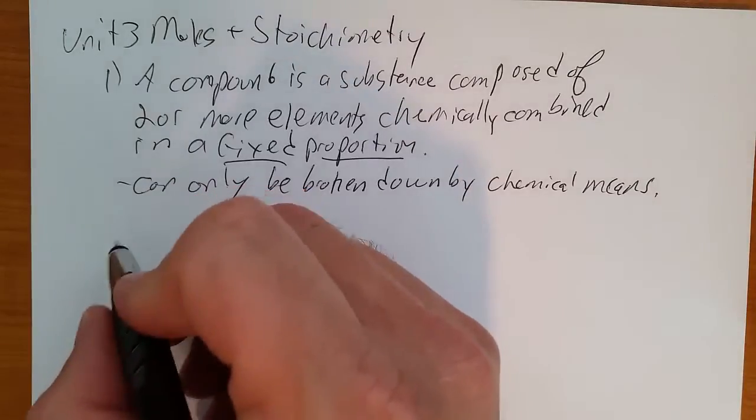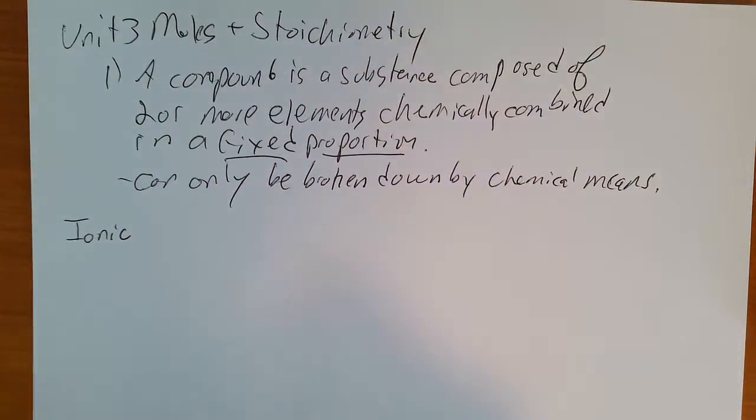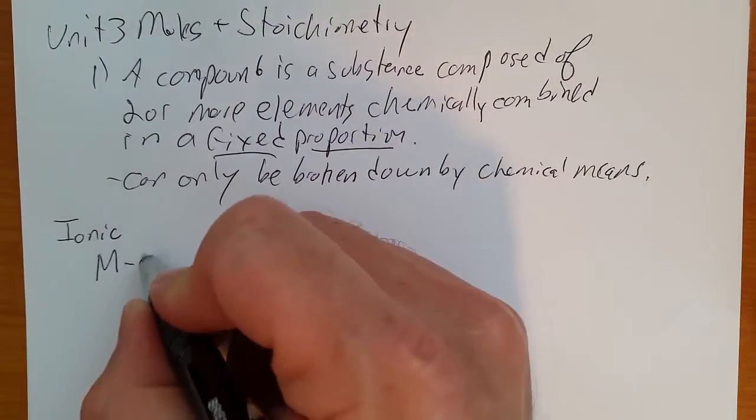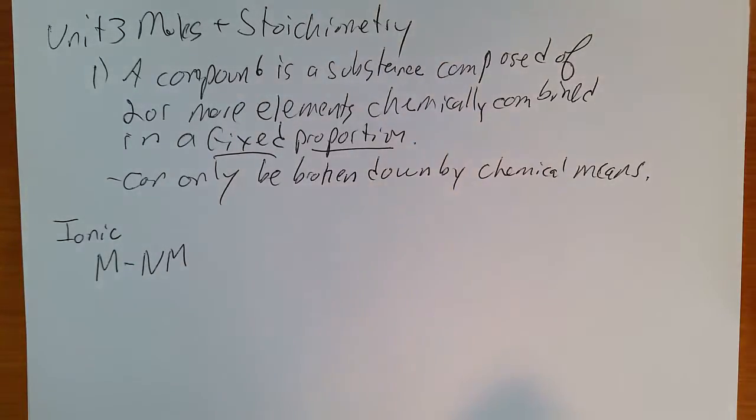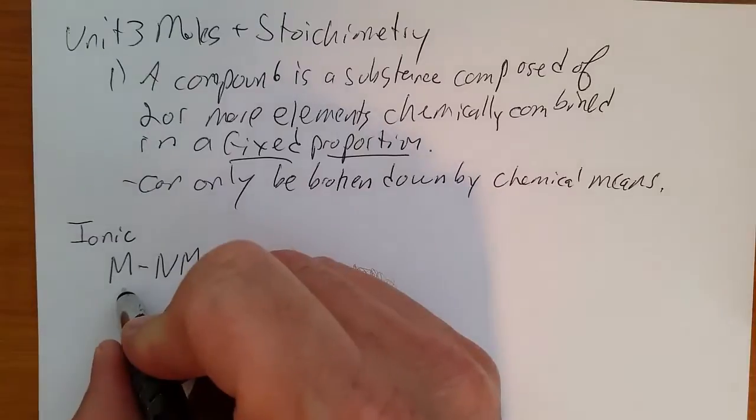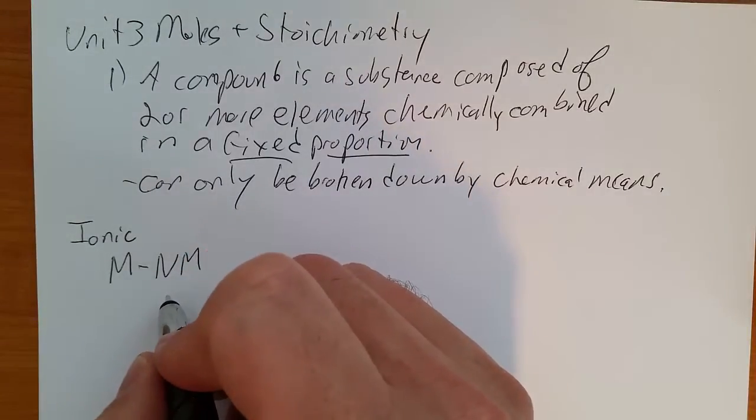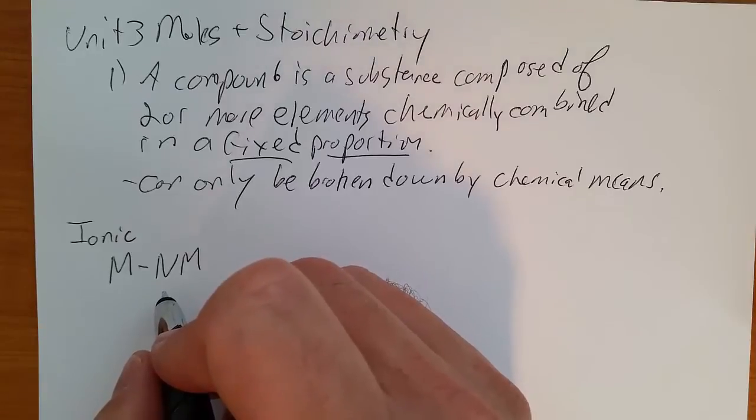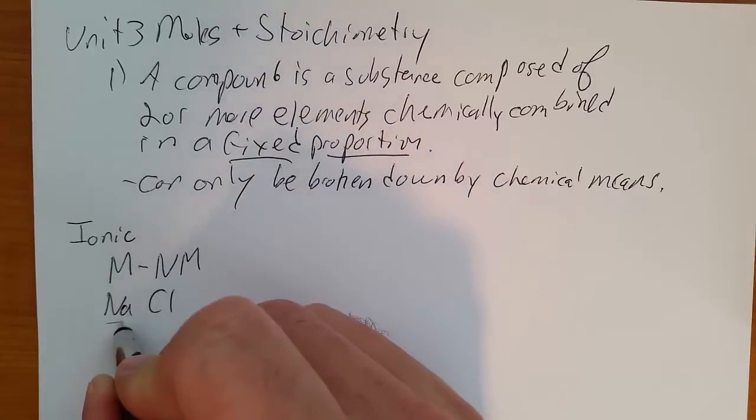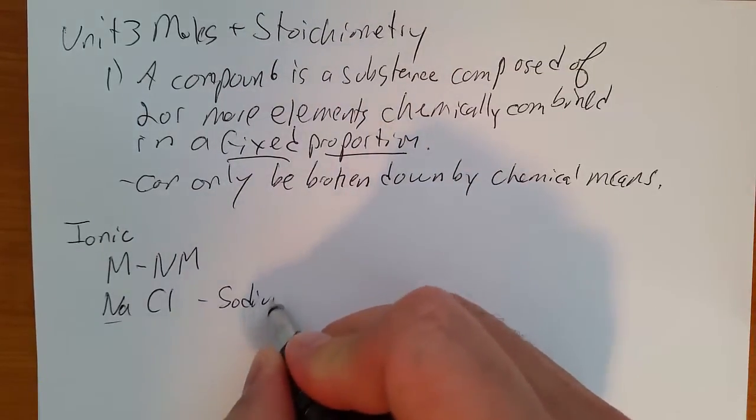So first kind of compound we're going to talk about is an ionic compound. An ionic compound is a metal bonded with a non-metal. When we name it, we use the name of the metal, so the metal keeps its name. The non-metal, the ending of the name changes to -ide. For example, NaCl - sodium is a metal, chlorine is a non-metal, becomes sodium chloride.